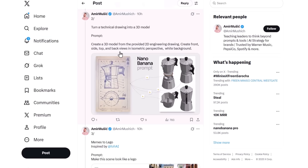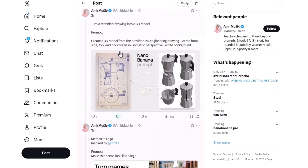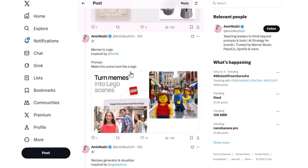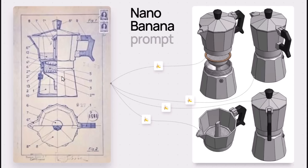With Nano Banana, you can also give it a 2D image of anything and ask the AI model to create a 3D model from that image. It will generate something like this, and you can then use it in an image-to-3D AI model to create stunning 3D objects.